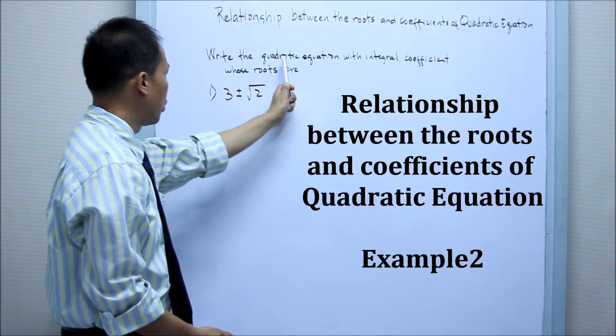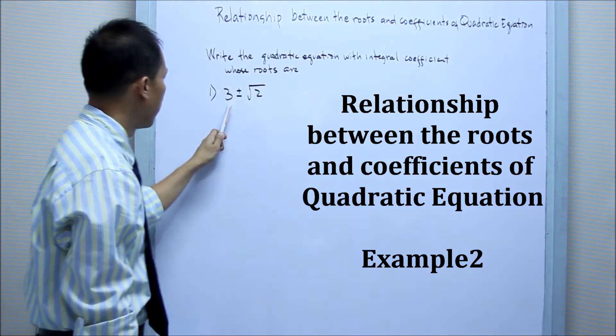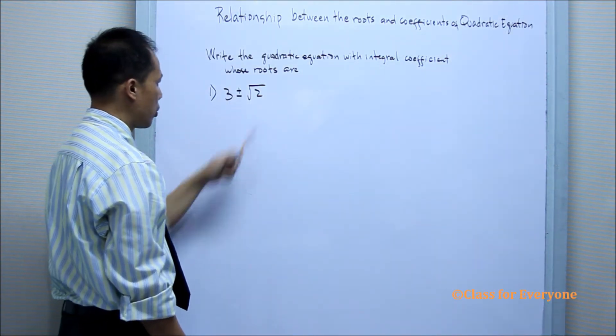Now, we are going to write the quadratic equation with integral coefficient whose roots are 3 plus or minus the square root of 2.